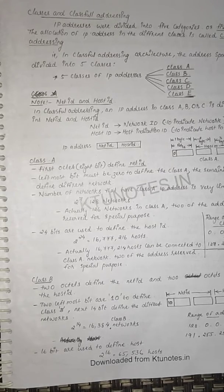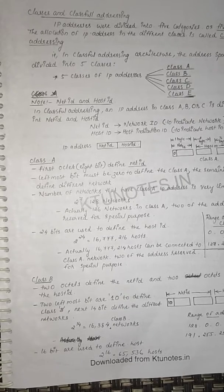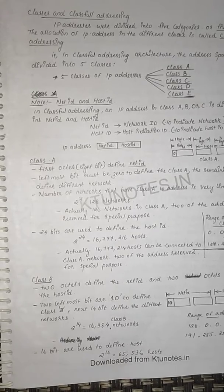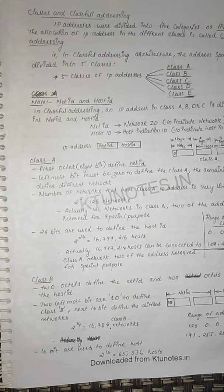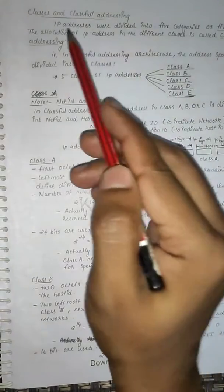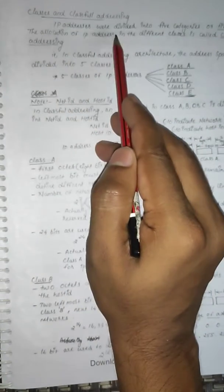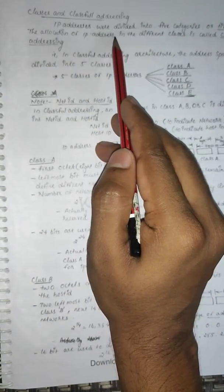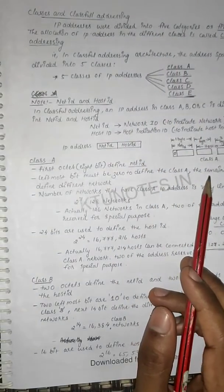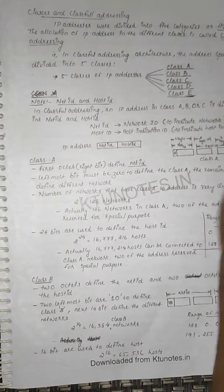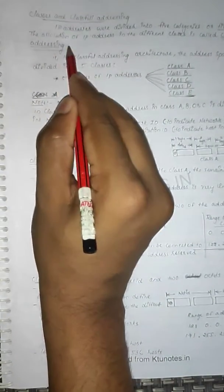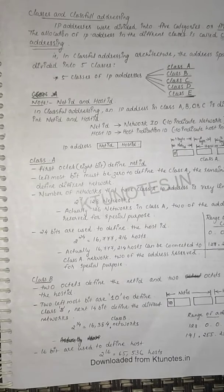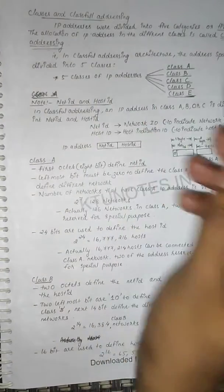IP addresses are classified into different classes. The IP addresses were divided into 5 categories. This is called classful addressing. In classful addressing architecture, 5 classes of IP addresses are defined.